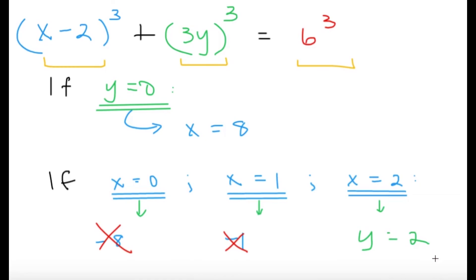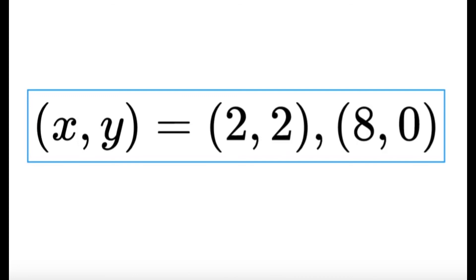Apparently, we're going to have the following ordered pairs as the solution. So (x, y) possible ordered pairs are (2, 2) and (8, 0). These two are the only possible solutions to the question, and this will be our final answer. Hopefully you guys learned something new from this video. I'll see you in the next one. Bye-bye!